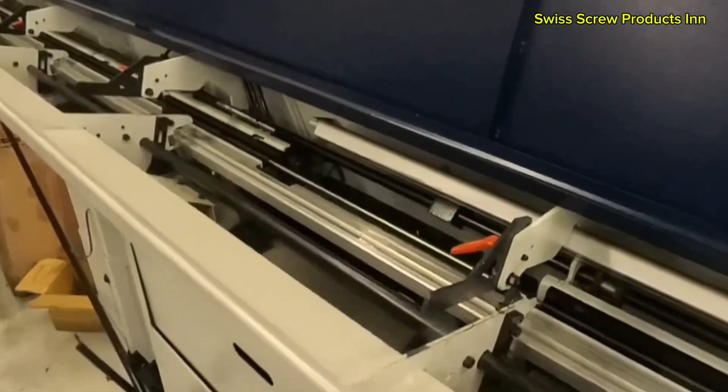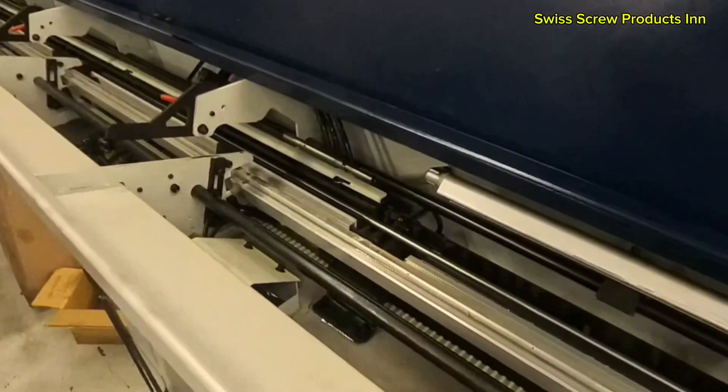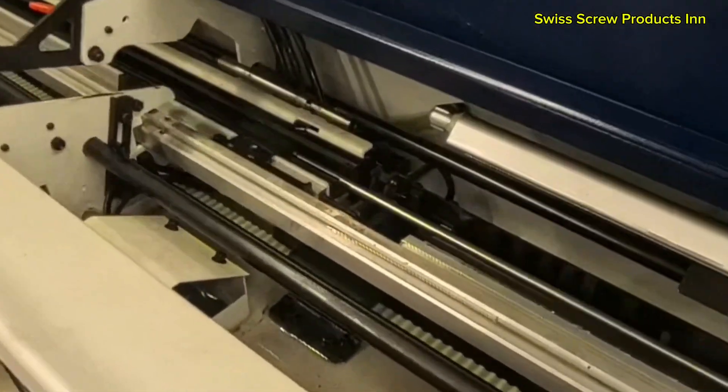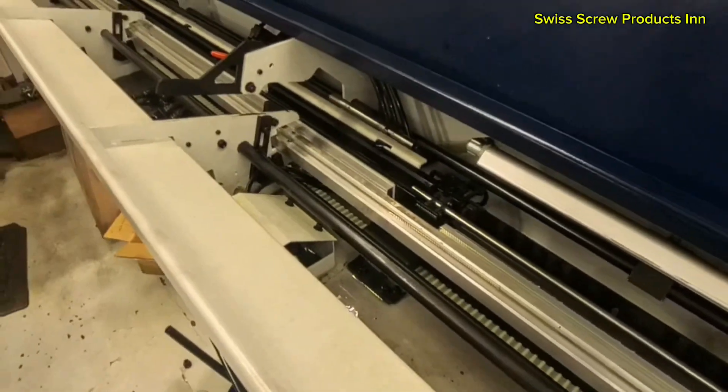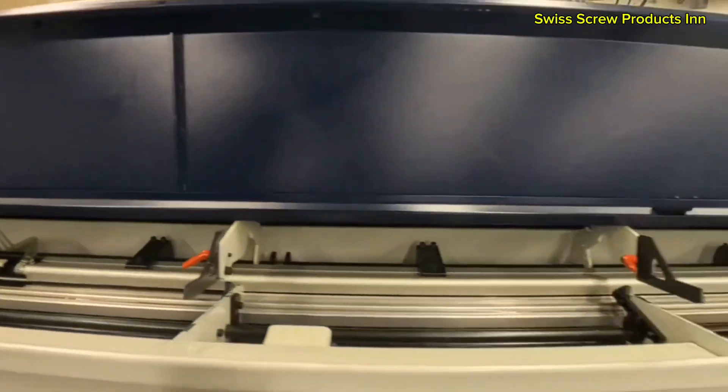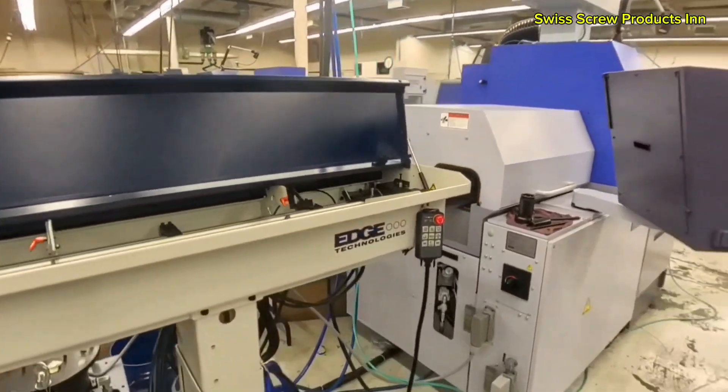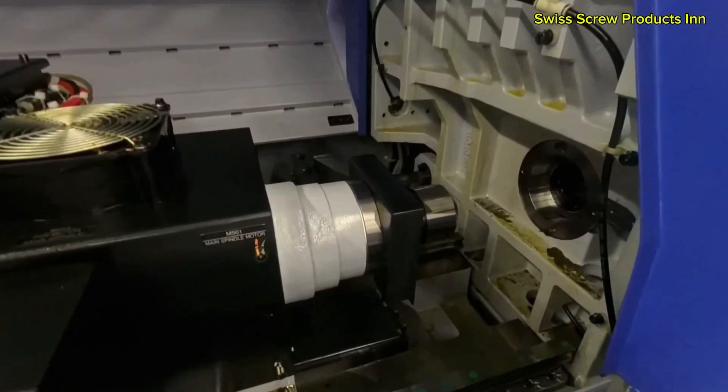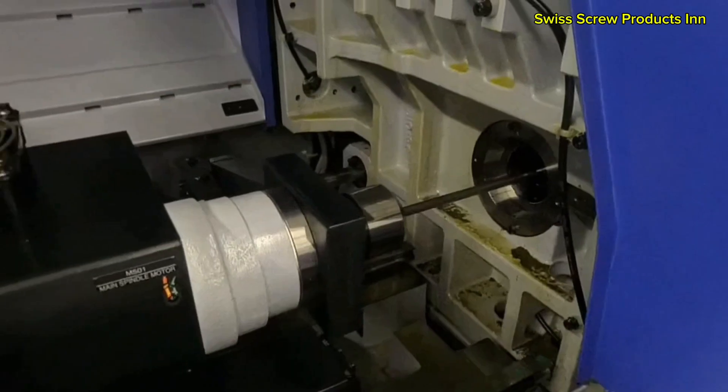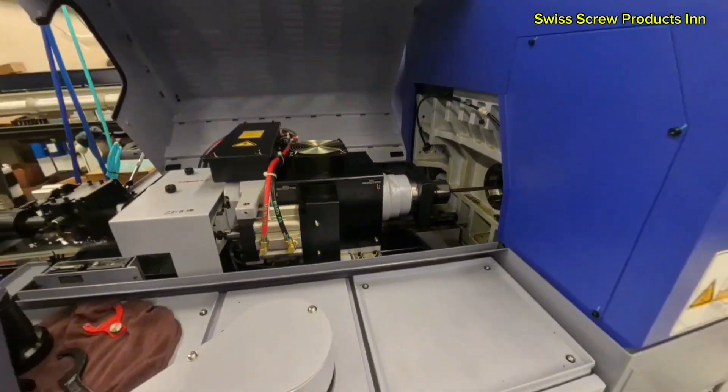At the heart of the Swiss machine is the sliding headstock. This component moves back and forth along the Z-axis, pulling the bar through a guide bushing. This bushing supports the bar right where cutting takes place, unlike traditional lathes where the part extends unsupported.